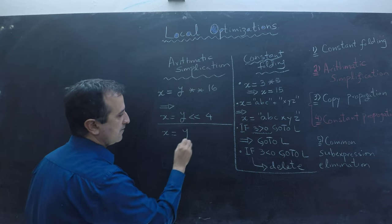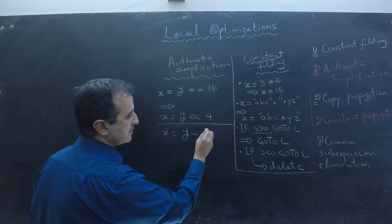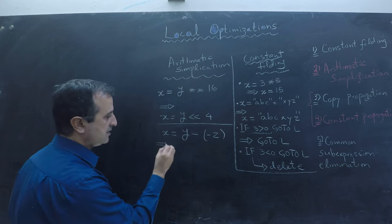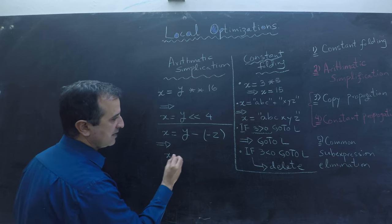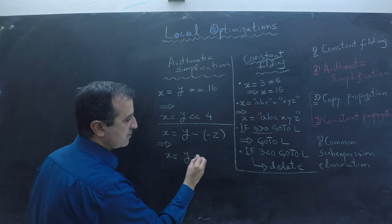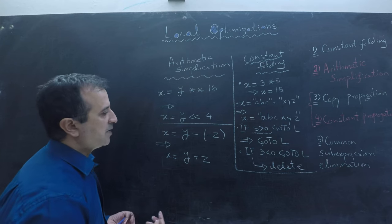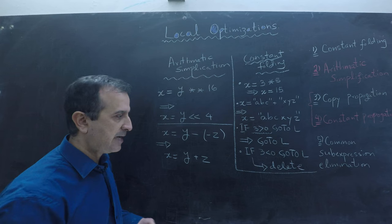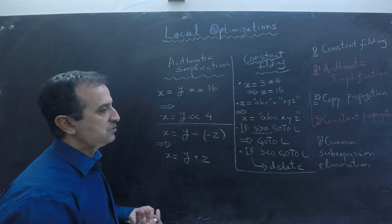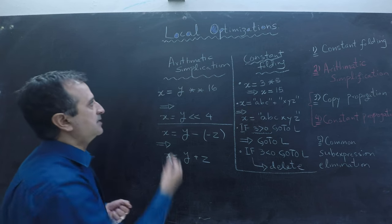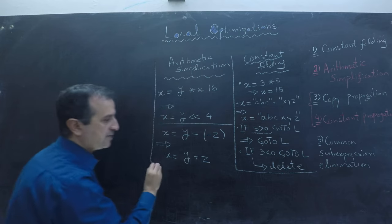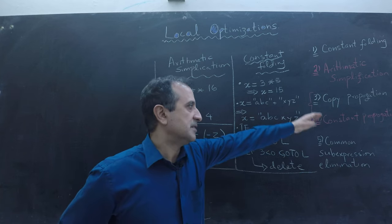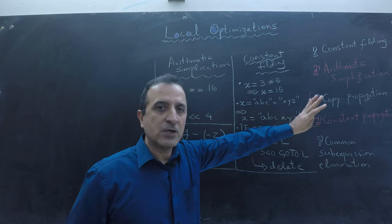Similarly, if I have an equation x equals to y minus minus z, then I simplify this equation to x equals to y plus z. You can think of many other such examples where you can simplify an equation at compile time. We should do all simplification at compile time instead of runtime so that our code can run faster.